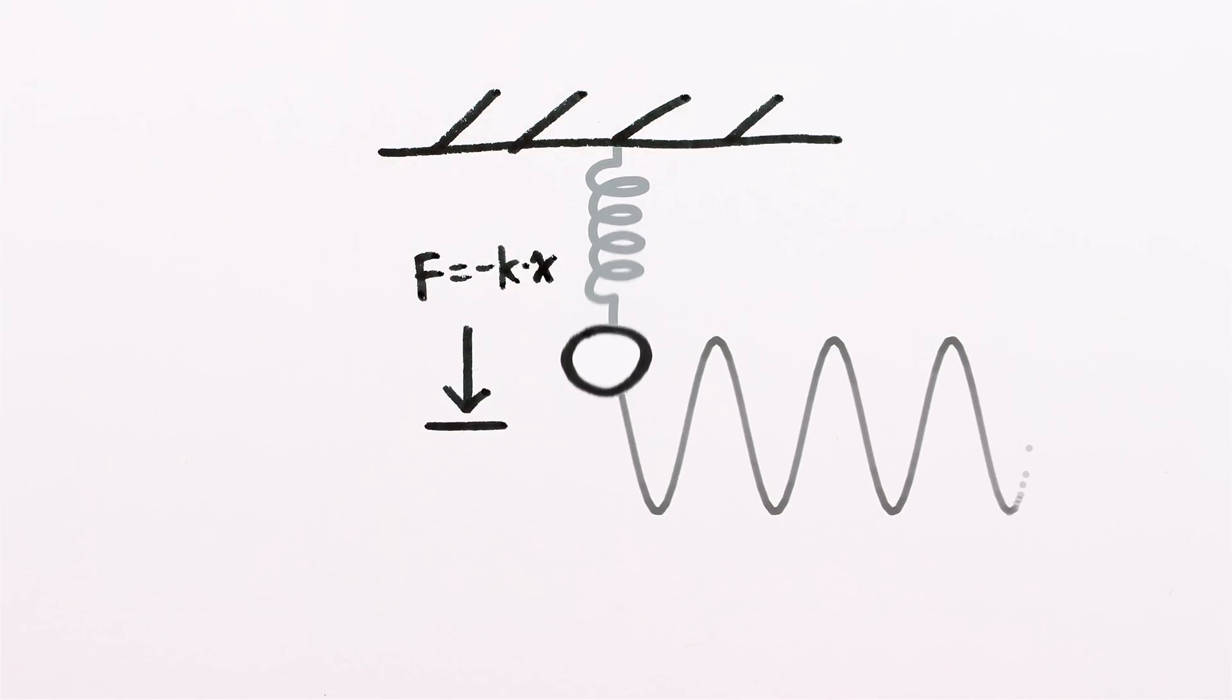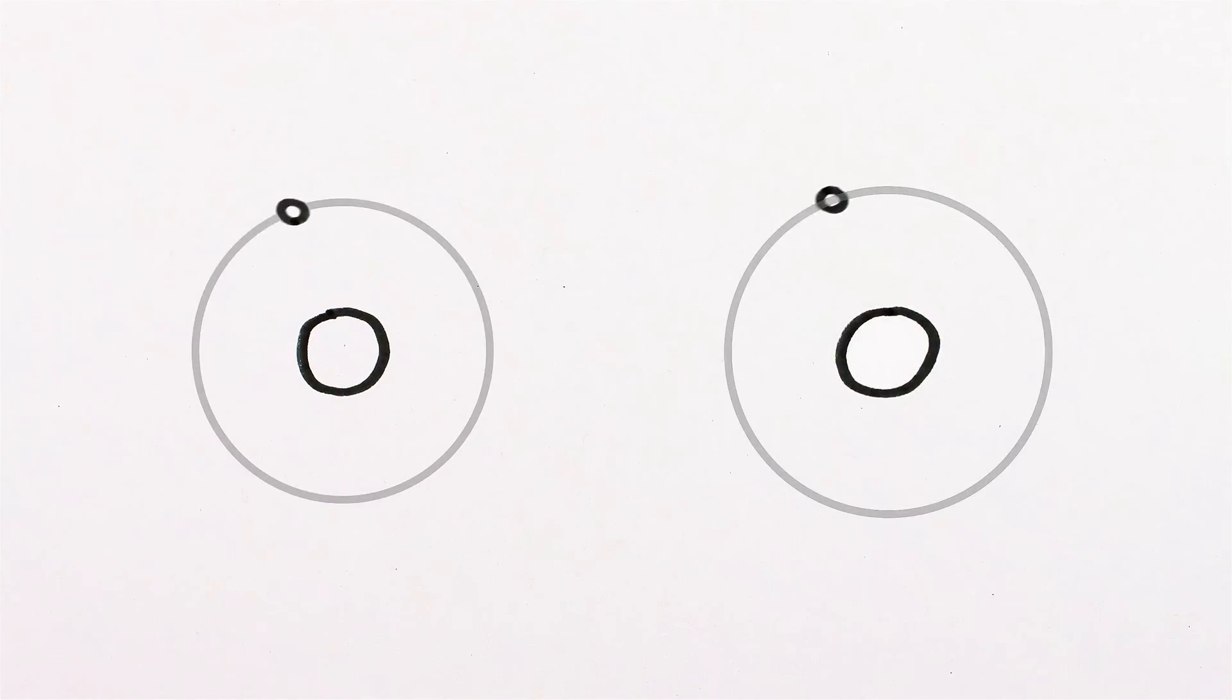Also sine waves over time. From a side-on perspective that projects two dimensions down to one, things in circular orbits look exactly like they're springing back and forth on giant coils of wire.